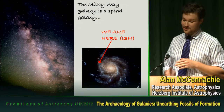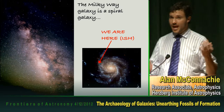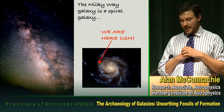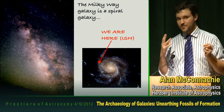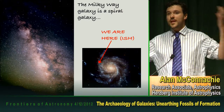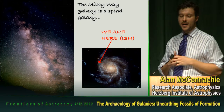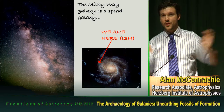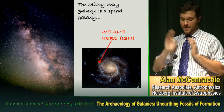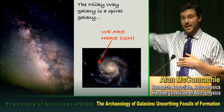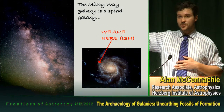Starting at the basics: our home galaxy is the Milky Way, which we believe is a spiral galaxy. The problem with studying the Milky Way is that we're inside it — it's like trying to figure out what Cleveland looks like if you're downtown with buildings in the way. Looking towards the central regions of the galaxy, you see all the diffuse light from the many billions of stars in the disk, and we're approximately towards the edge of this main disk of stars.